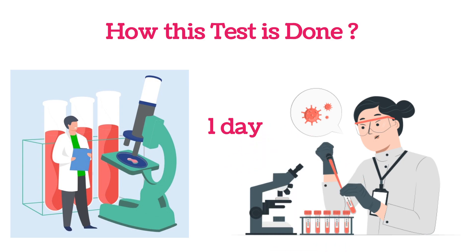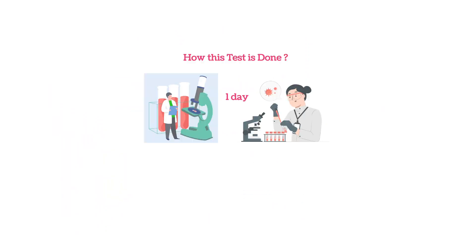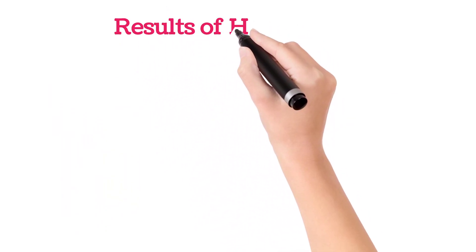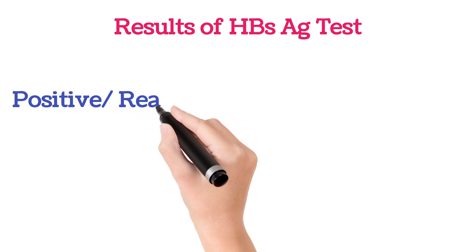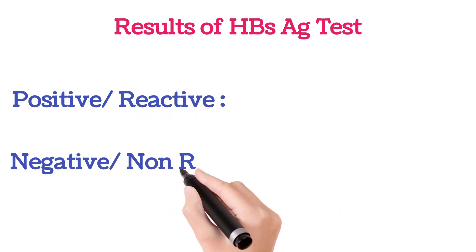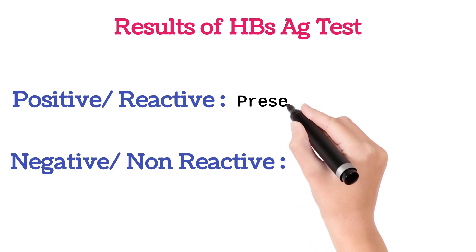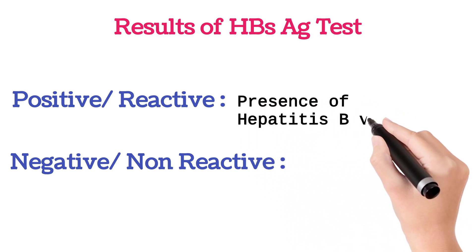Coming to the report, we can see two words: positive or reactive, negative or non-reactive. Reactive means in the person's blood there are chances of Hepatitis B virus presence.